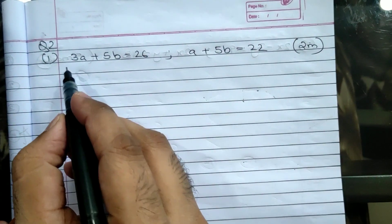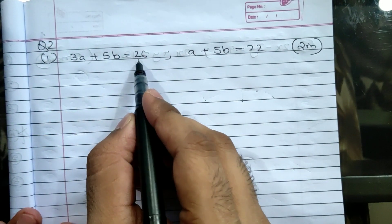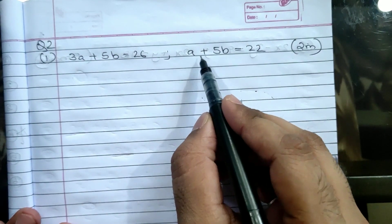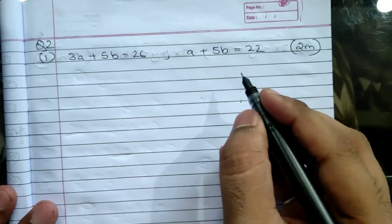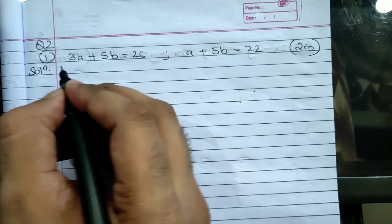This is question number 2, sub question 1. Here we have 3a plus 5b equals 26, and a plus 5b equals 22. Let us start with the solution.